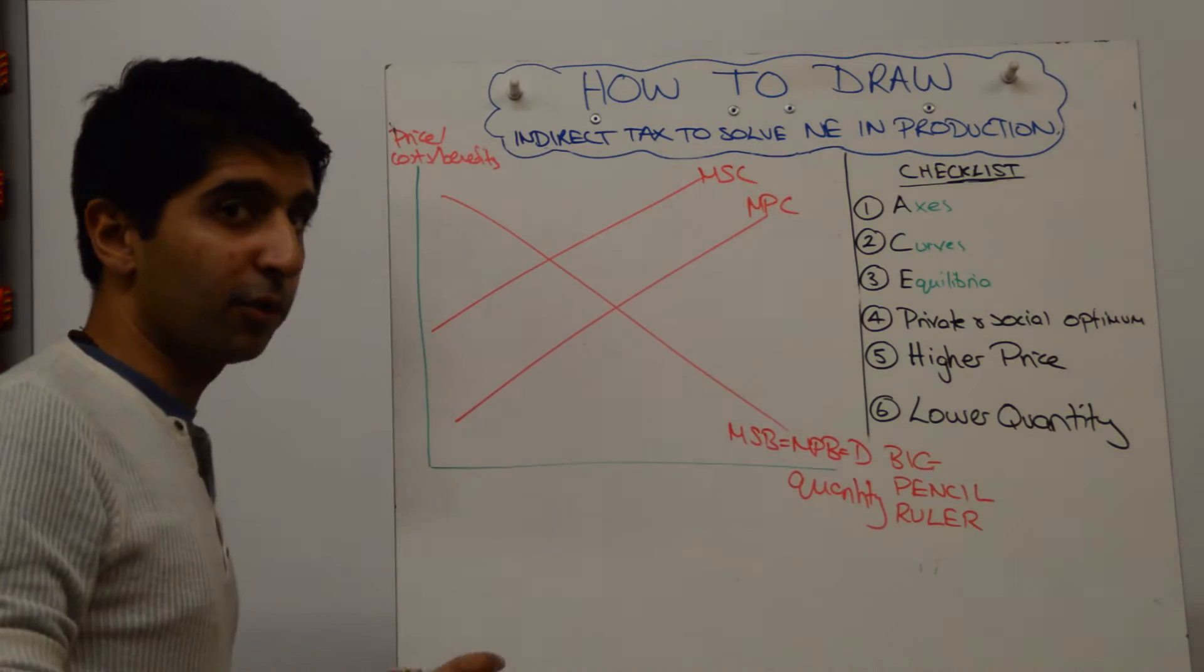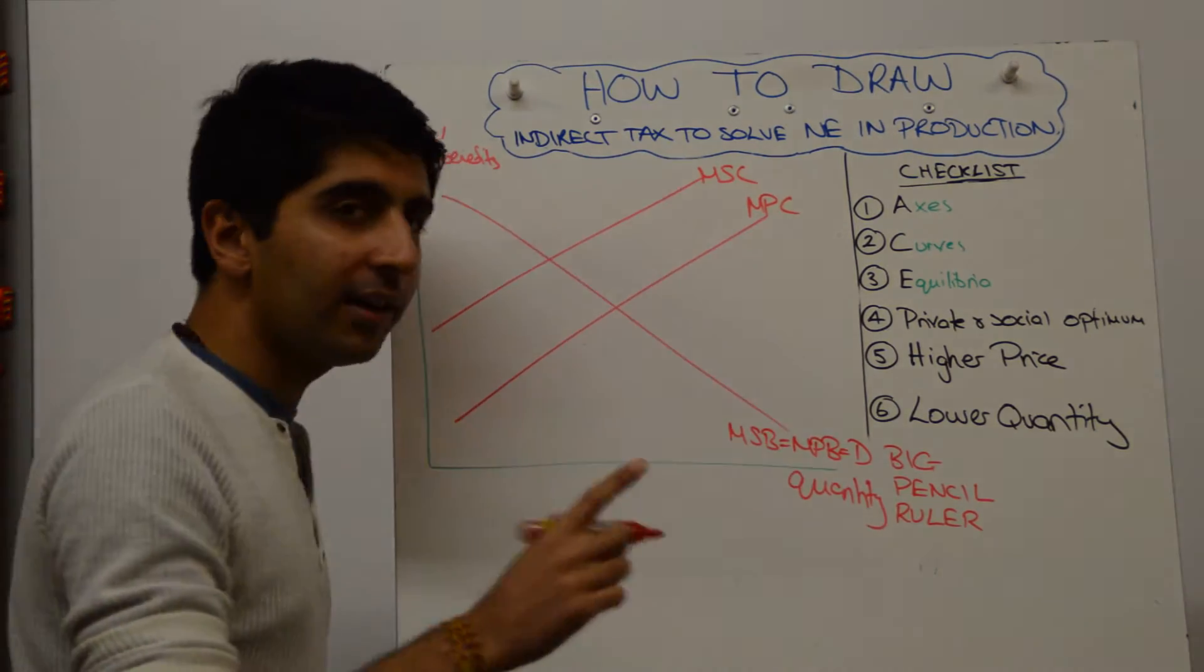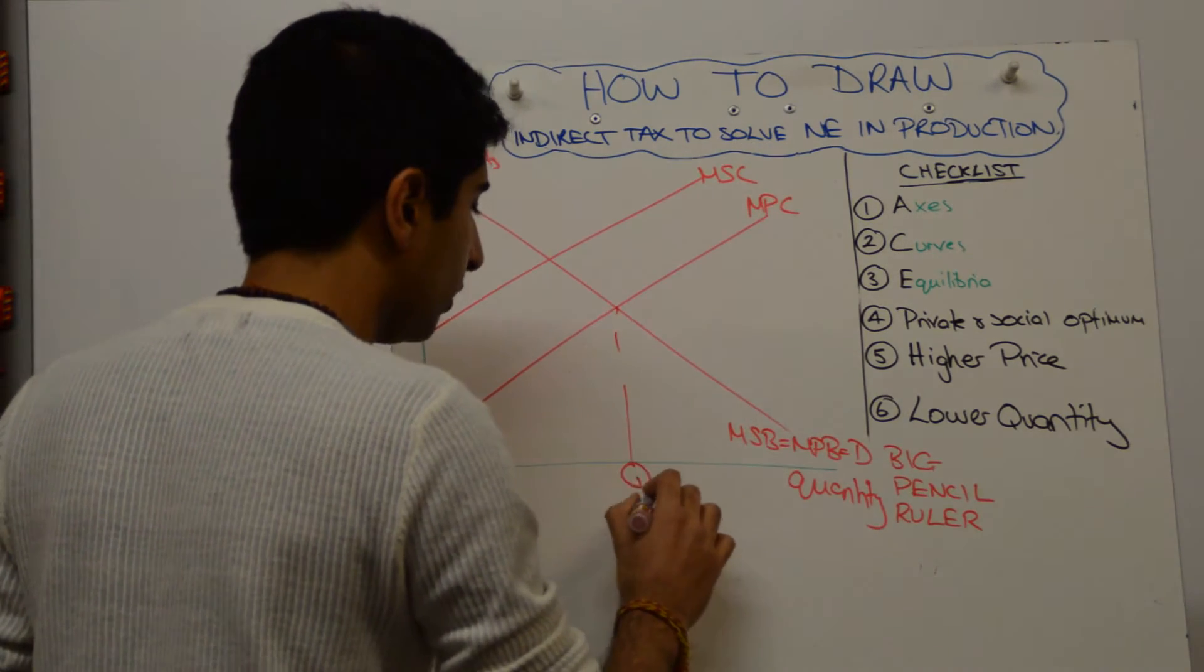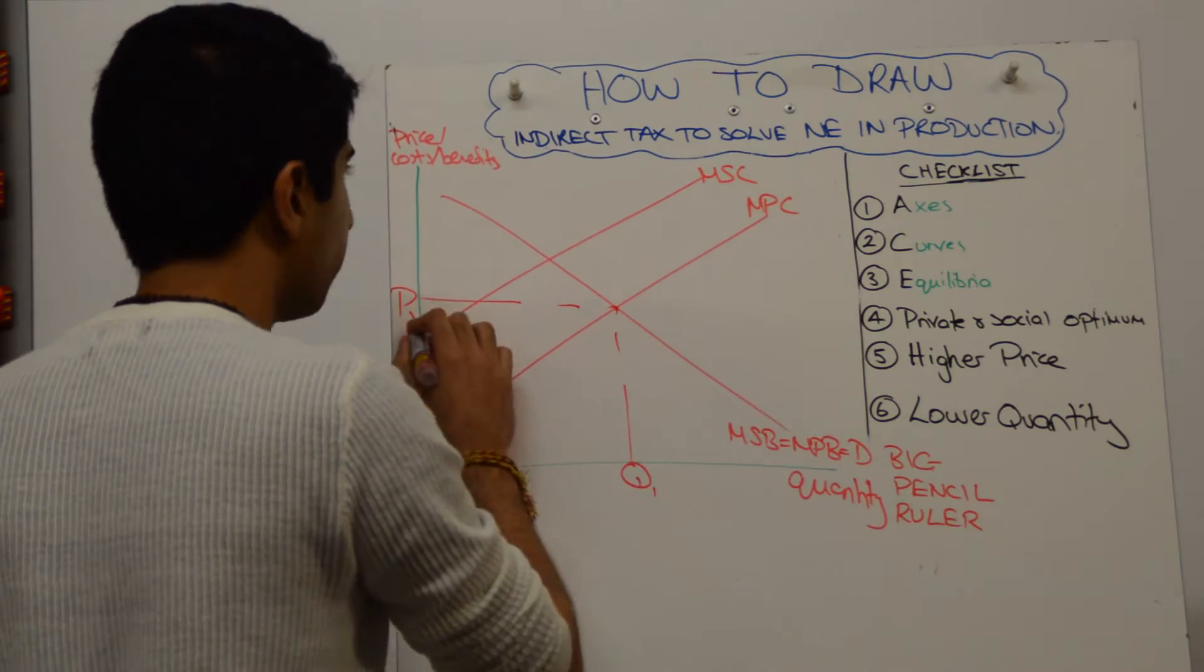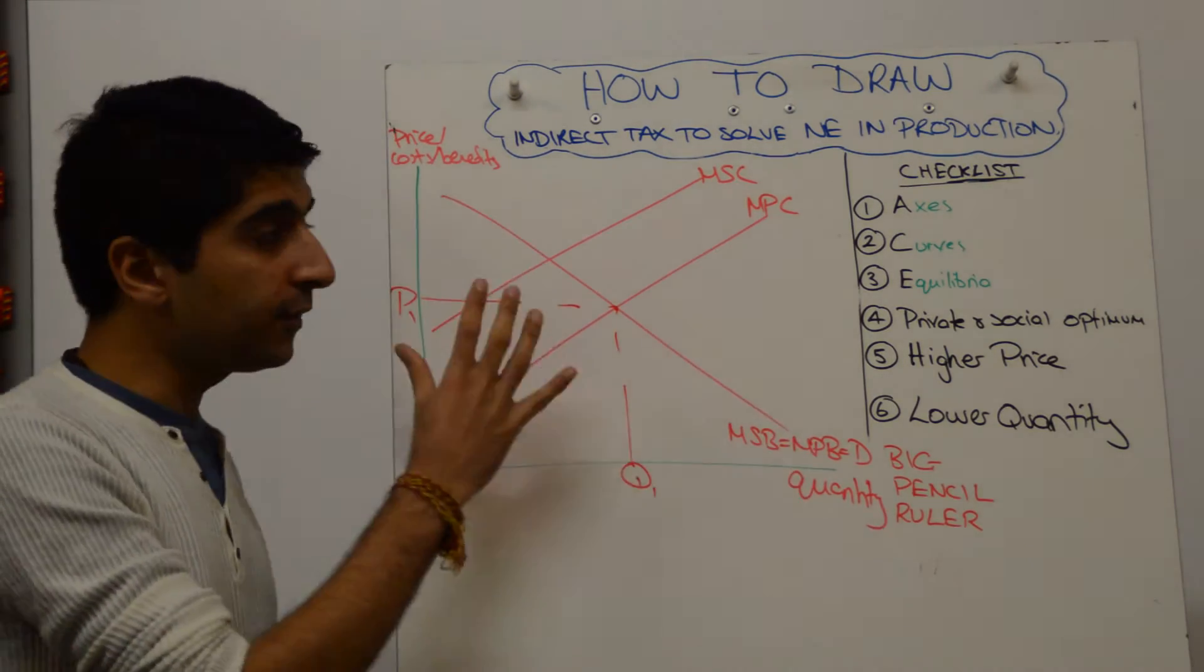So this is the diagram you're familiar with, the curves labelled as such. I'm only going to label the private optimum for now. So let's label that Q1 and P1 private optimum, where MPC equals MPB. That's a good start on this diagram.